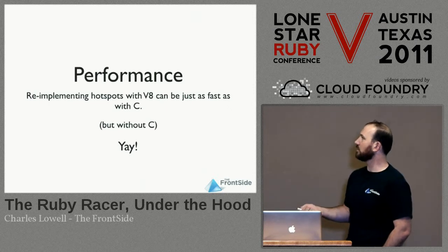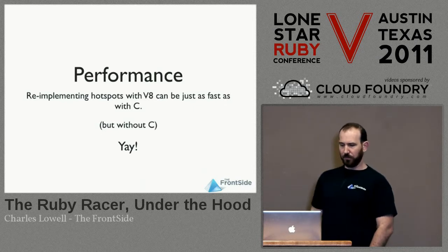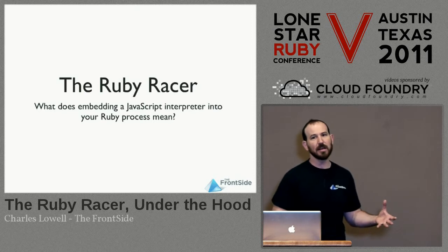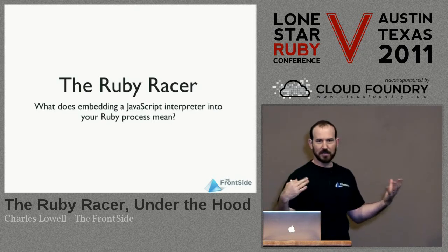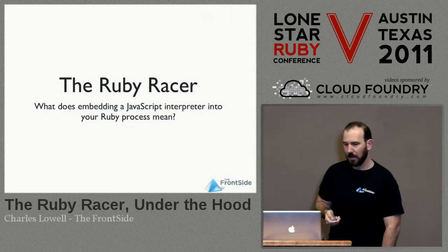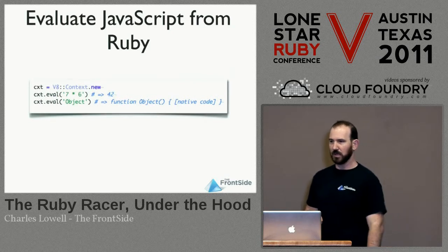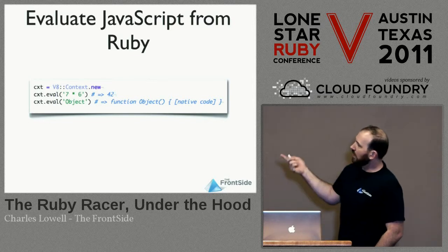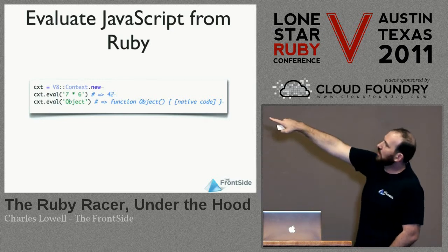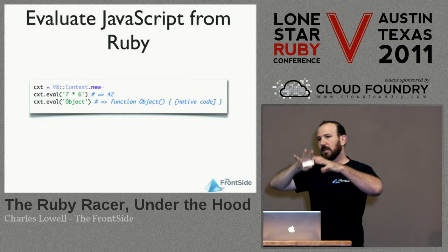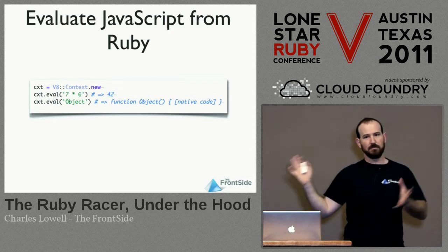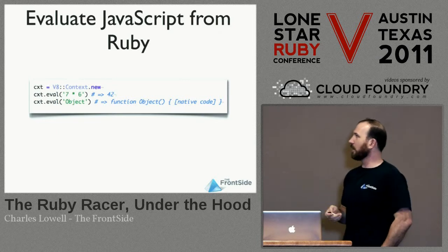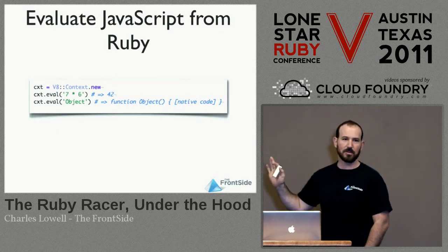So we're going to go straight into how it works. We have to ask: what exactly does it mean to have a JavaScript runtime inside your Ruby process? For me, it means basically three things. First, you can evaluate JavaScript code. What I'm doing here is creating a new V8 context — a completely and totally hermetically sealed JavaScript world. It's got the JavaScript syntax and standard library, which is absolutely tiny. You can't access Ruby from it, there's no DOM. It's Spartan.